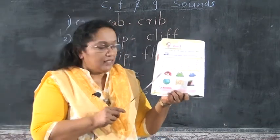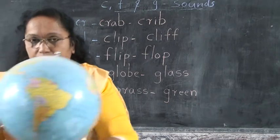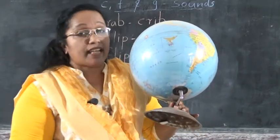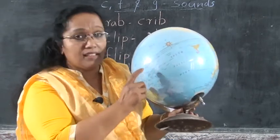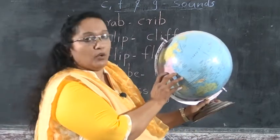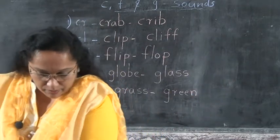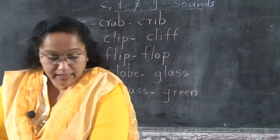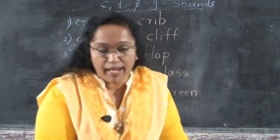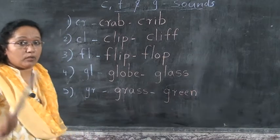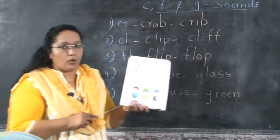What is this, children? This is globe. What is this? We can find states, places, and countries on a globe. This is globe. Write the spell globe: G-L-O-B-E. Look at the board carefully and write — don't make mistakes. Globe. G-L-O-B-E. Write down here. G-L-O-B-E.